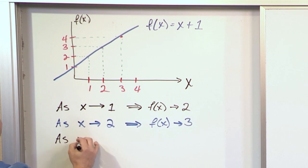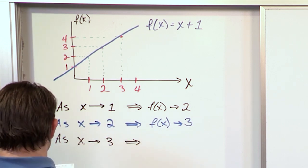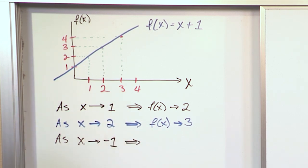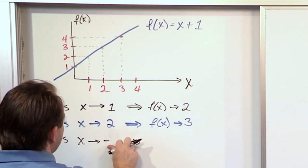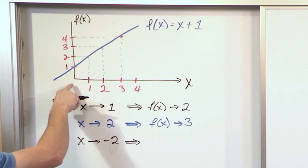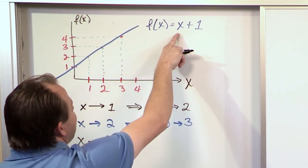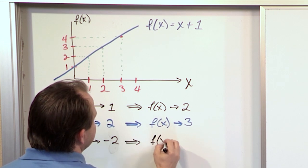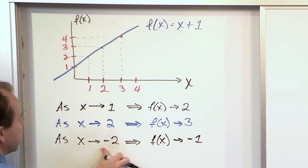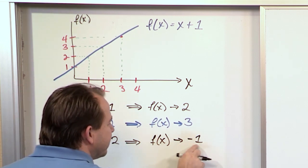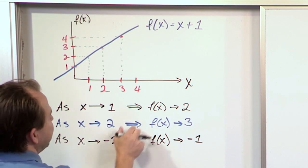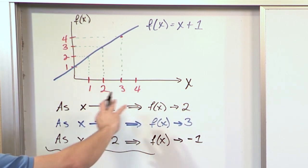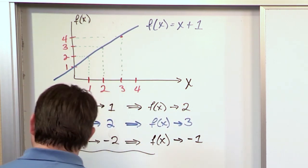For a straight line this might seem simple, but as you get more different kinds of functions — especially functions that jump around — you don't ever want to quite get to that number; you just want to see how the function behaves as you get very close. As another example, as x approaches negative 2, negative 2 plus 1 gives you negative 1. So as that happens, f of x would approach negative 1. But in terms of the limit, we don't ever quite get there — the function just approaches this value but never quite gets there.